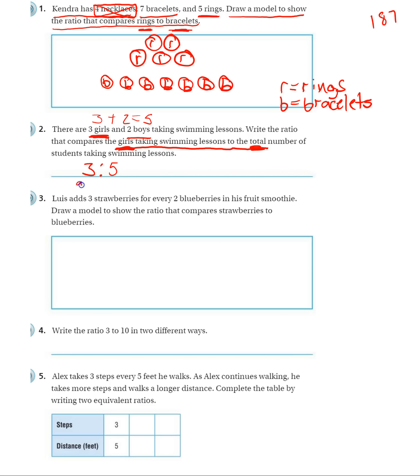Girls and boys gives you a total of five. So three to five would be that ratio, girls to total. So make sure you're reading these questions carefully.